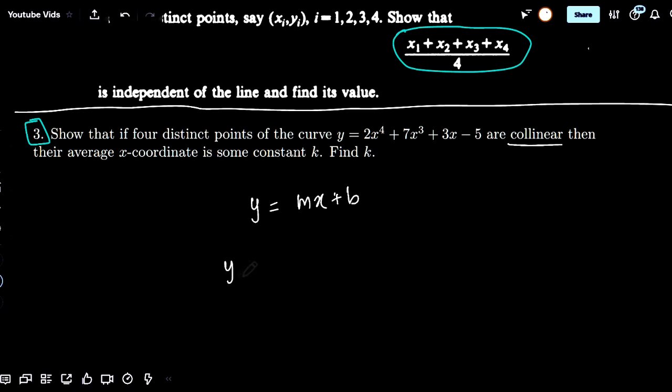But they also satisfy y equals 2x to the 4 plus 7x cubed plus 3x minus 5. And we know that there are four such distinct points.